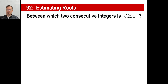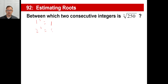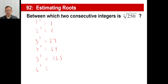Now the cube root of 250. You do exactly the same thing — find a number times itself 3 times that gives you a little over or under 250. Let's try: 1³=1, 2³=8, 3³=27, 4³=64, 5³=125. Then 6³: 6×6=36, and 36×6=216. Then 7³: 7×7=49, and 49×7=343.